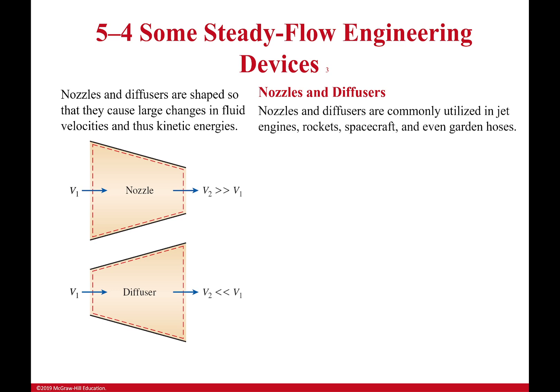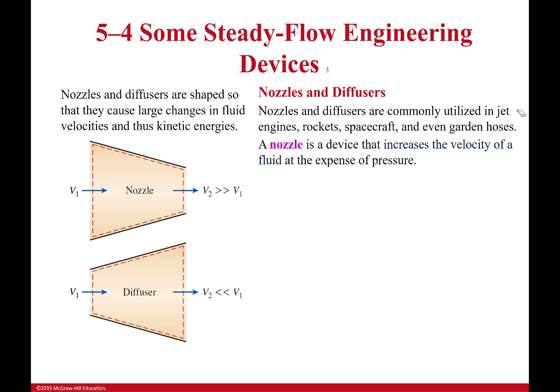So where are these used? They're used everywhere: engines, rockets, spacecraft, and even garden hoses because we need that water to go fast. Nozzle makes stuff go faster and a diffuser makes stuff go slower. Nozzle decreases the pressure, diffuser increases the pressure.